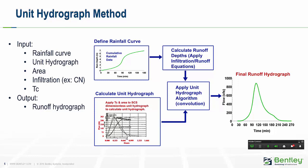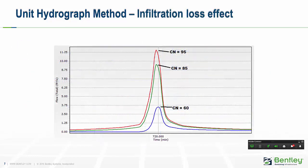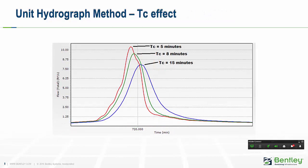This graph shows the effect of the loss method with the SCS unit hydrograph using a synthetic SCS Type 2 24-hour rainfall distribution with a total depth of 5 inches. The red line has a curve number of 95, typical for pavement; the green line is a CN of 85; and the blue line is a CN of 60. The second graph shows the effect of adjusting the time of concentration — it attenuates the hydrograph as the time of concentration increases.